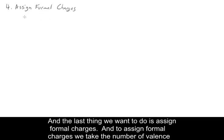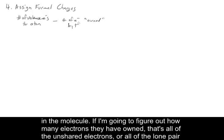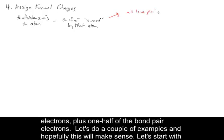The last thing we want to do is assign formal charges. To assign formal charges, we take the number of valence electrons for a given atom and subtract the number of electrons owned by that atom in the molecule. The electrons owned equals all of the unshared or lone pair electrons, plus one half of the bond pair electrons.